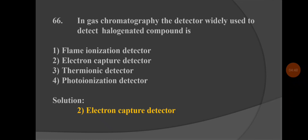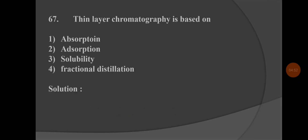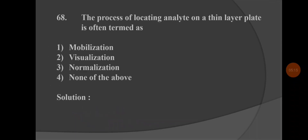Next question: Thin layer chromatography is based on — option 1: absorption, option 2: adsorption, option 3: solubility, option 4: fractional distillation. Thin layer chromatography is based on the adsorption principle, so option 2 is the correct answer.